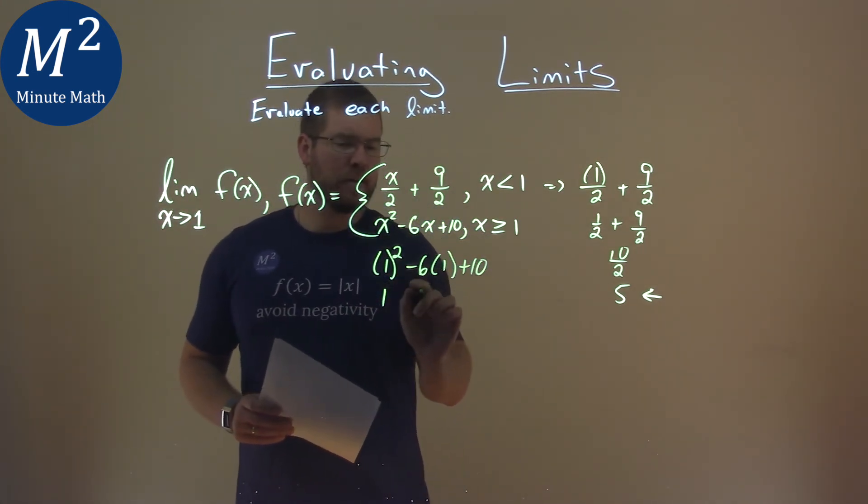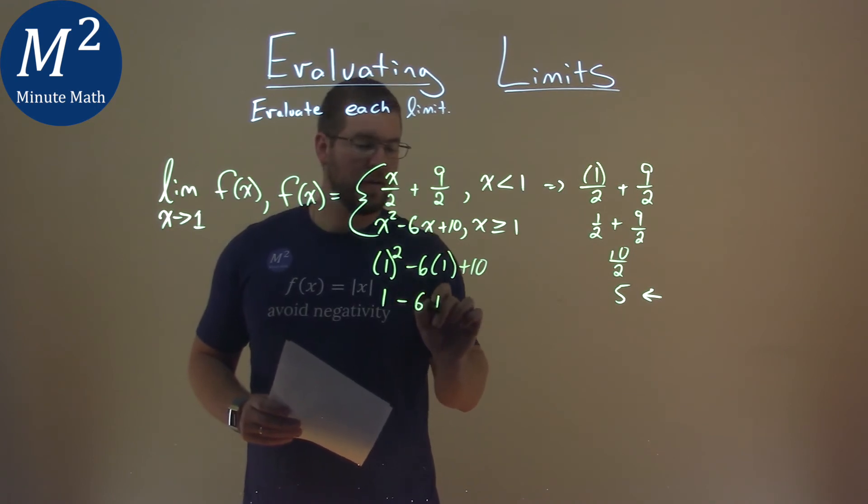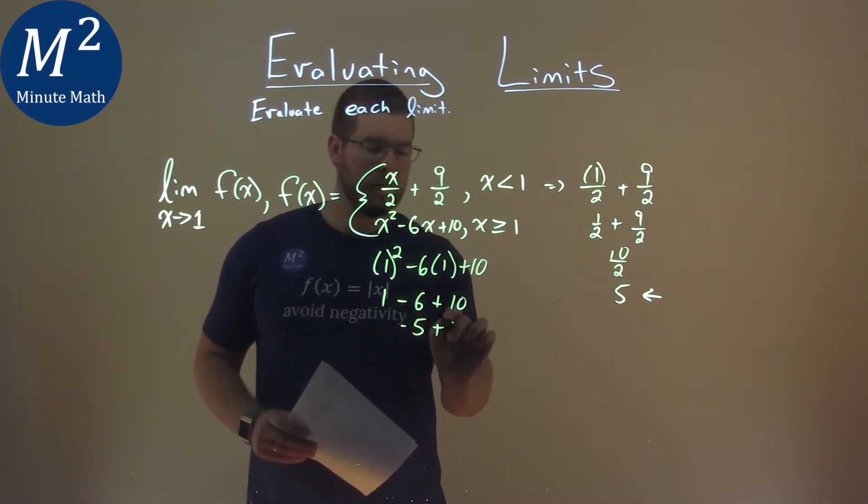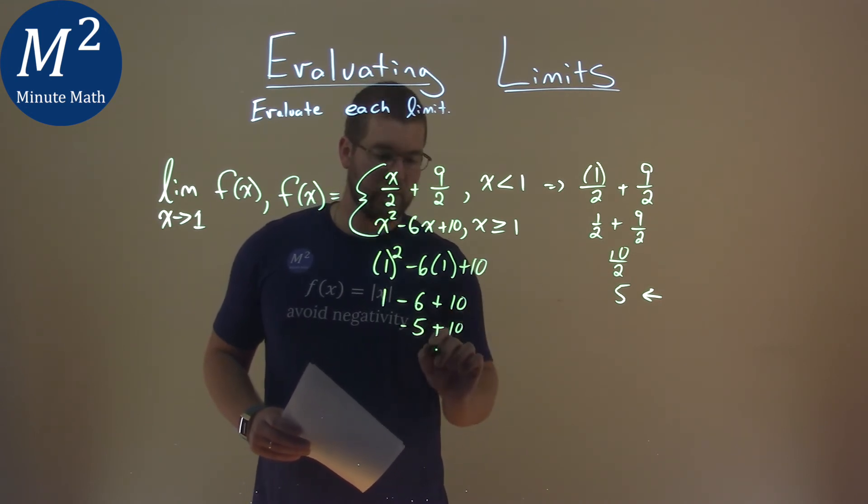1 squared is 1. 6 times 1 is 6, plus 10. 1 minus 6 is negative 5, plus 10. Negative 5 plus 10 is positive 5.